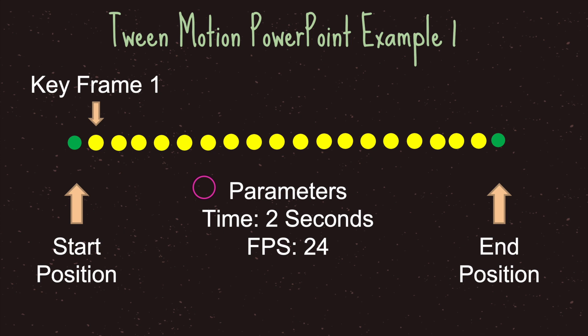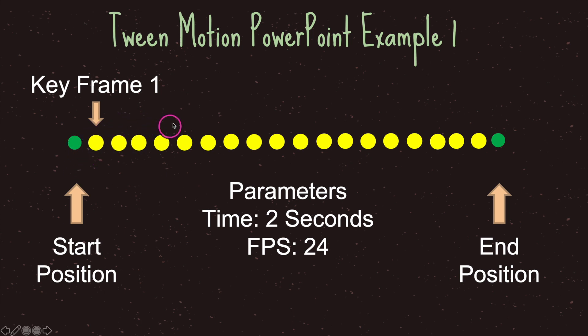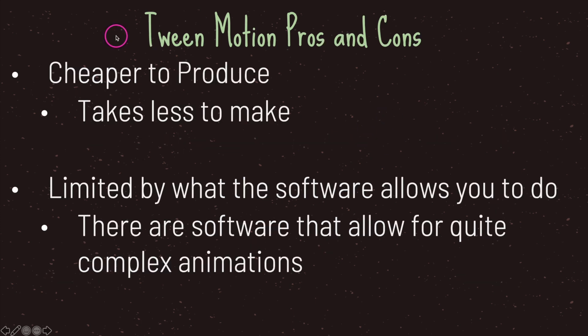It can get more complex than this, but this is the basic summary of how the computer calculates tween motion animation. In reality, the computer is actually creating forty-eight key frames between the starting position and the ending position, moving it along at two seconds divided by forty-eight. The pros of tween motion animation are that it is cheaper to produce and takes less time because you just give it two positions and the computer calculates the animation. It's also easier because you don't need to draw it yourself every time.